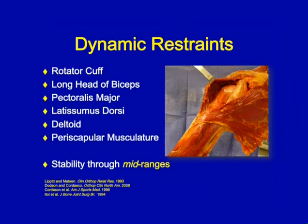Getting into dynamic restraints, the rotator cuff is the primary restraint against translation and motion of the humeral head, giving rise to the notion of the concavity compression effect securing the glenohumeral head in the glenoid during motion. Additionally, the long head of the biceps, pectoralis major, latissimus, deltoids, and surrounding periscapular musculature have all been reported to play some role in glenohumeral joint stability through motion. Conversely, these structures provide stability through mid-ranges.